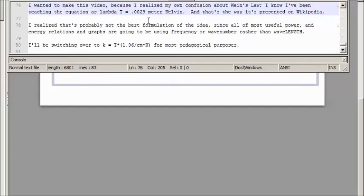So, I wanted to make this video because I realized my own confusion about Wien's law. I know I've been teaching the equation as lambda times T equals .0029 meter kelvin, and that's the way it's presented in Wikipedia. I realized that that's probably not the best formulation of the idea since all of the most useful power and energy relations and graphs are going to be using frequency and wavenumber rather than wavelength. So, I'll be switching over to K equals T times 1.96 per centimeter kelvin, for most pedagogical purposes.